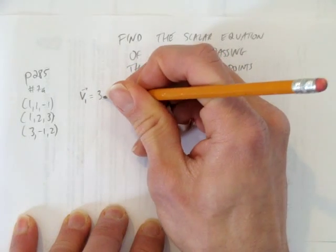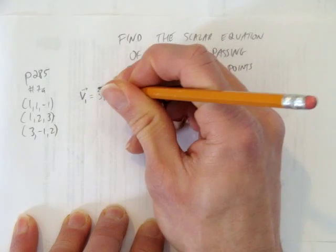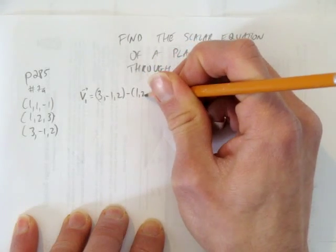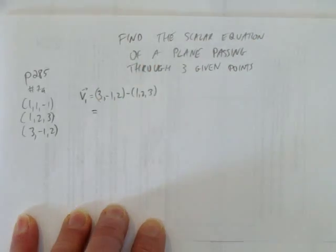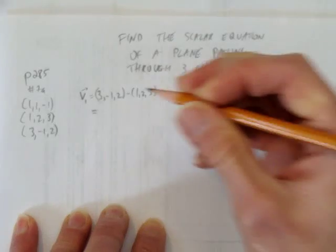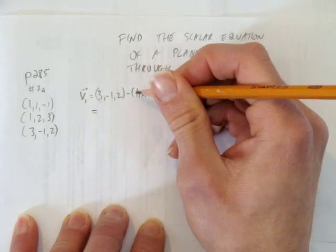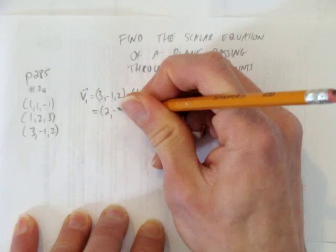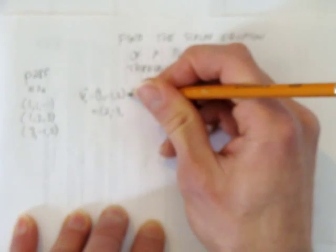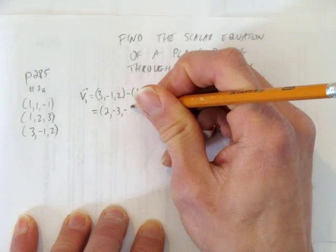And that's just going to be (3, -1, 2) take away (1, 2, 3). When I subtract their components, I'll have a direction vector from point 2 to point 3. So, what's 3 take away 1, 2. What's -1 minus 2, -3. And what's 2 minus 3, -1.